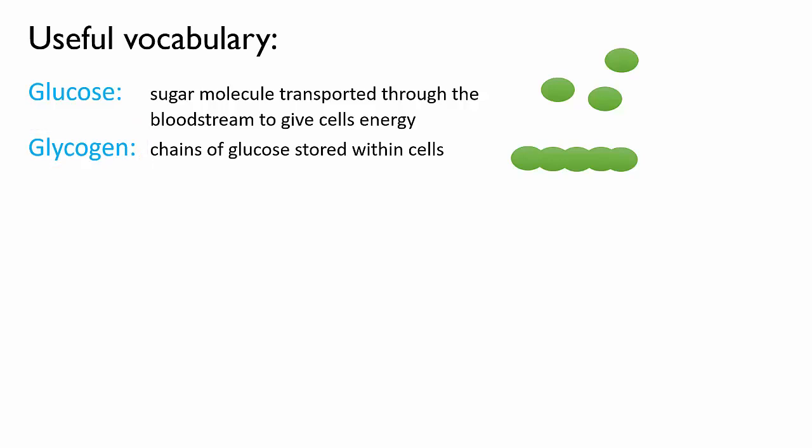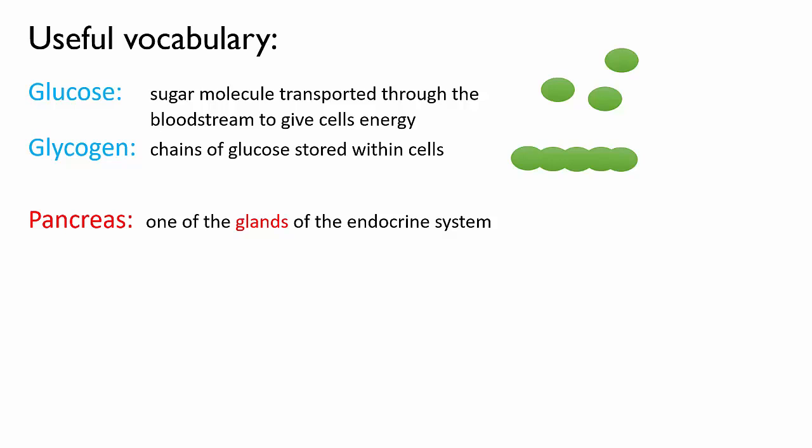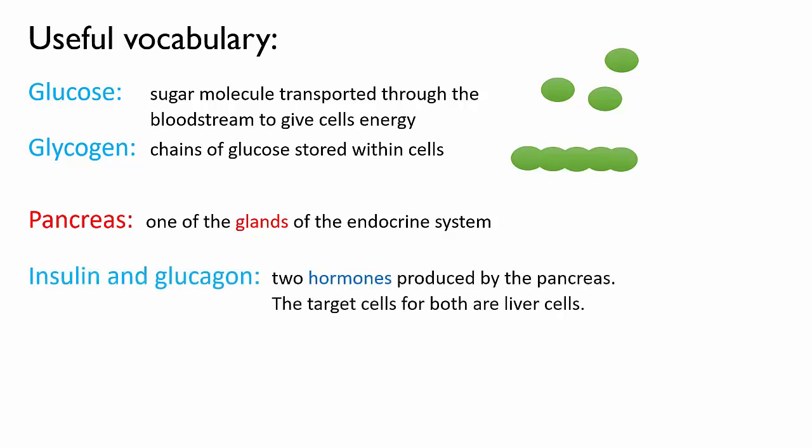Recall that the pancreas is one of the glands of the endocrine system. It produces two hormones that are vital for this feedback loop — they're called insulin and glucagon. Make sure not to mix up glucagon, which is a hormone and a signaling molecule, with glycogen, which is the stored form of glucose.